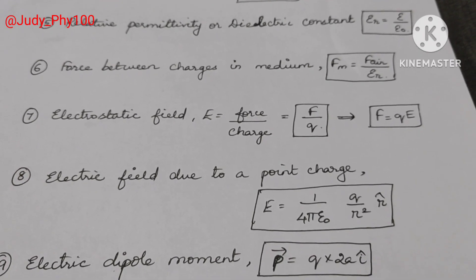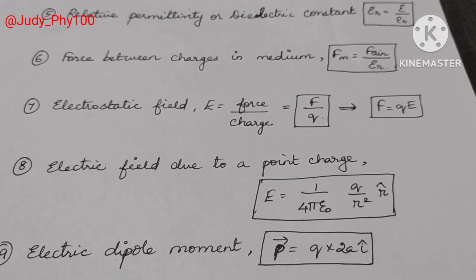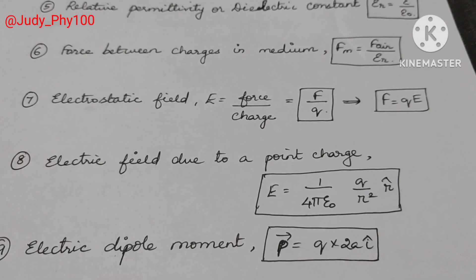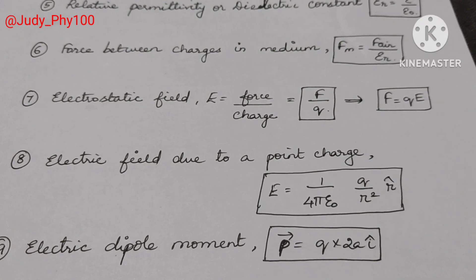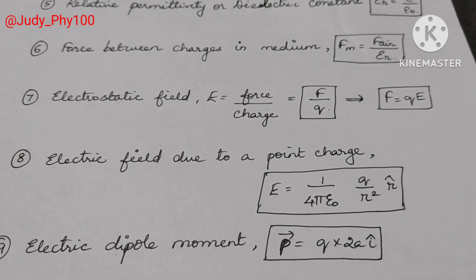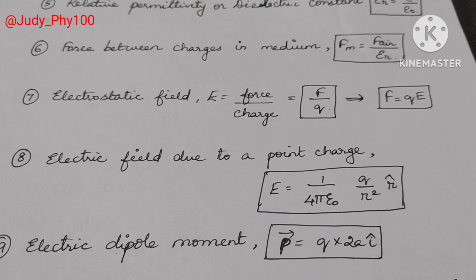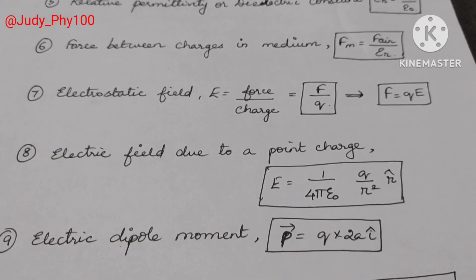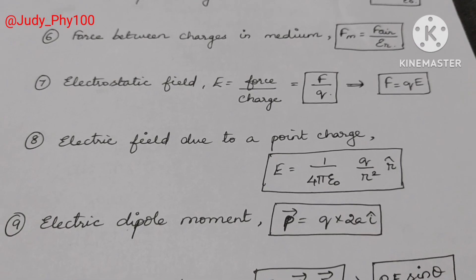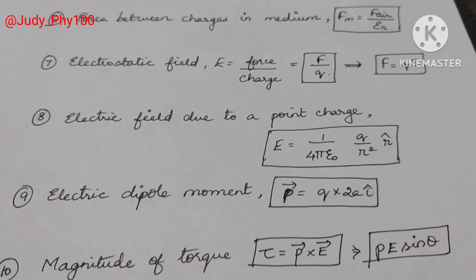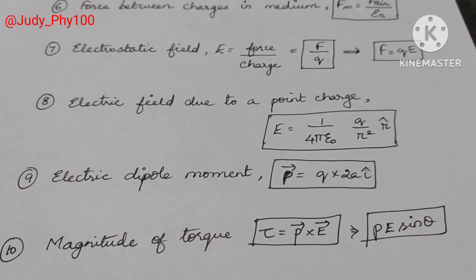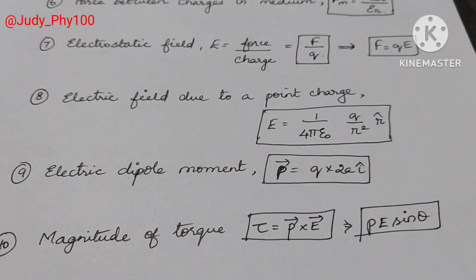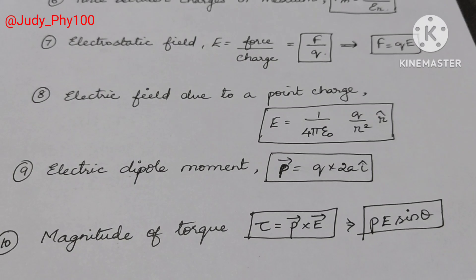Electric dipole moment: p is equal to q into 2a. Magnitude of torque: tau is equal to vector p cross vector E, which is equal to pE sin theta.